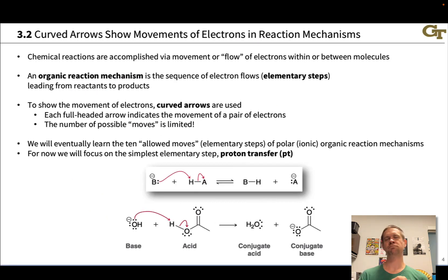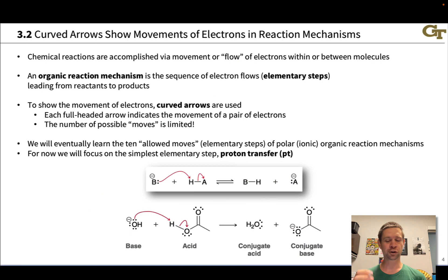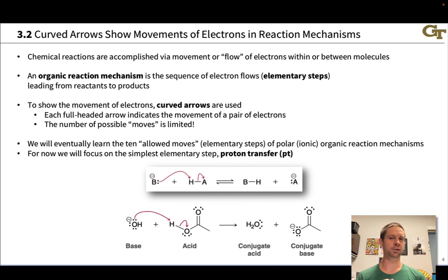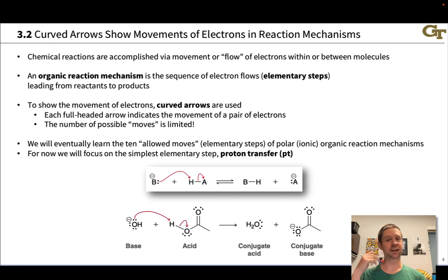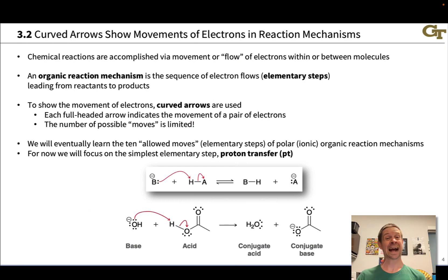A proton transfer is the first and arguably the simplest elementary step we'll come across in reaction mechanisms. Chemical reactions are accomplished by the movement or flow of electrons within or between molecules, and we use curved arrows to represent those electron flows. Curved arrows can look very complex very quickly, but the number of possible moves you can make with curved arrows is limited to about 10 possibilities — just like resonance, particular structures within reacting organic compounds will activate your brain for particular types of electron flows.